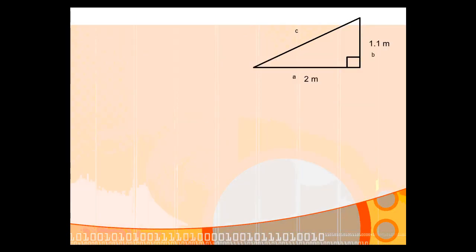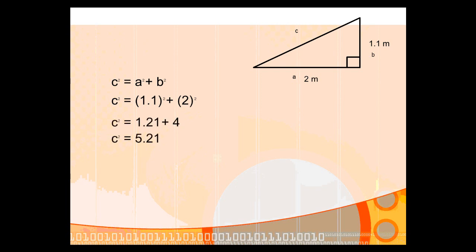Then, using Pythagoras' theorem, we can find the hypotenuse. The hypotenuse is the side opposite the right angle. In this case, c squared is going to be 1.1 squared plus 2 squared. You work that out to be 5.21, and square rooting gives you your hypotenuse, which, to one decimal place, is 2.3 metres.